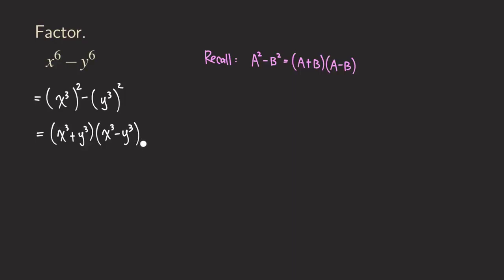Well, to completely factor this expression, we actually need to keep going, because we realize that this first factor right here, x cubed plus y cubed, is the sum of two cubes. And the other factor is x cubed minus y cubed, so that's the difference of two cubes. So what happens is that we continue to factor them.